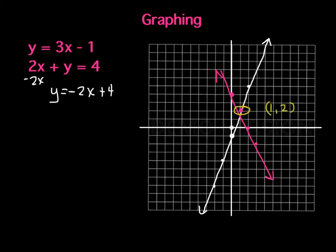What that means is that is the point that is on both graphs. If I plug in this x and this y to both of my equations, they should both work. If I plug in 1 here, it should give me 2. If I plug in 1 and 2 here, it should give me 4.